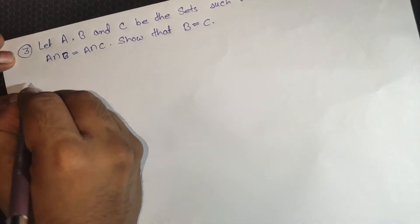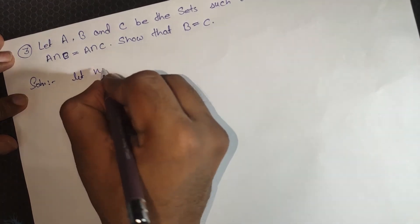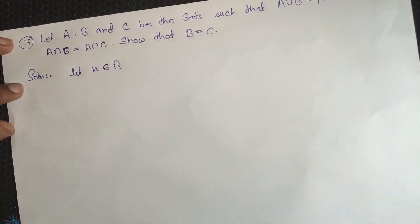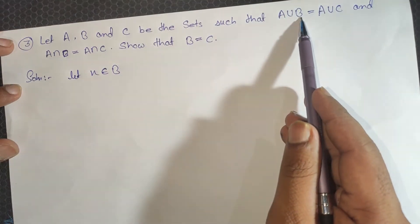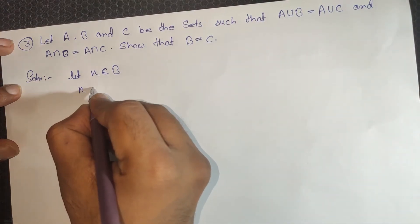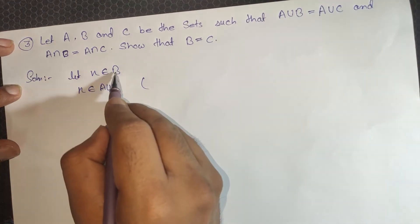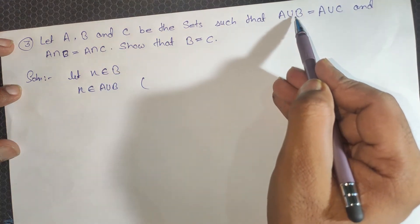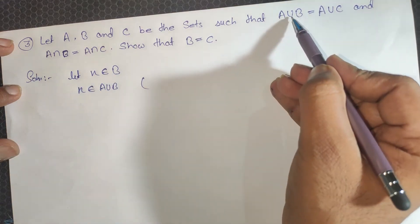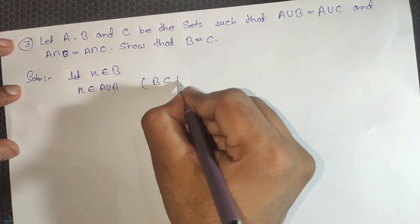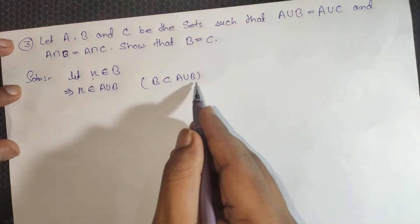To solve this, first we assume that there exists an element X which belongs to B. Since X belongs to B, X will belong to A union B. The reason is that B is a subset of A union B, so when X belongs to B, this implies X belongs to A union B.